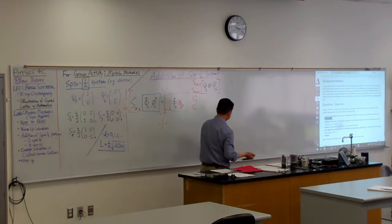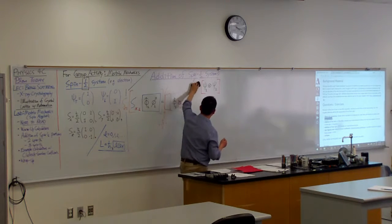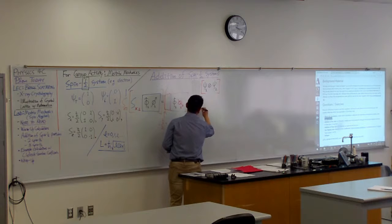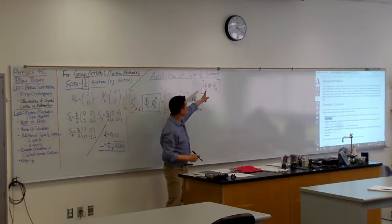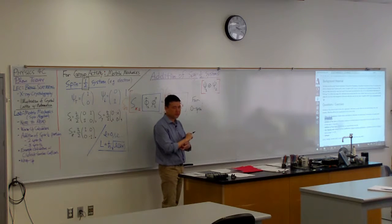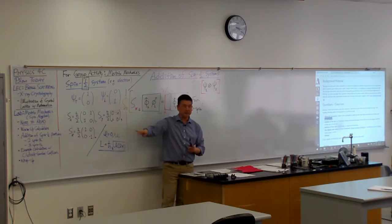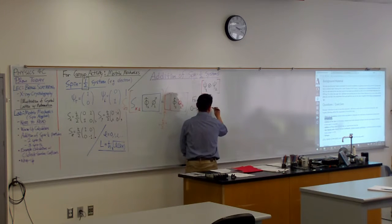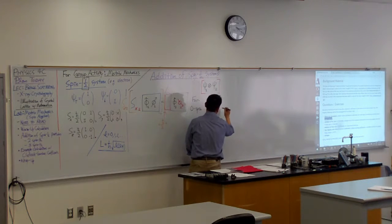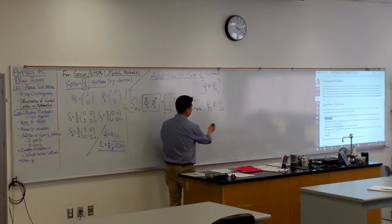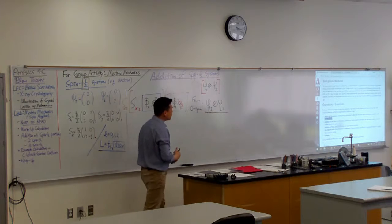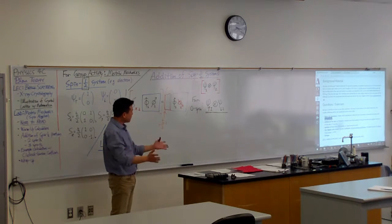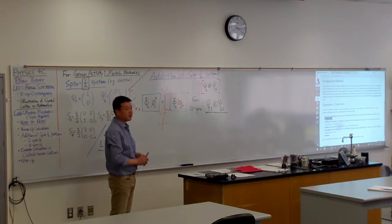So for zero spin, let's try: for particle 1 I use a spin-up state in direct product with spin-down for particle 2. If this is what we think is a zero-spin state, how would you verify it mathematically? What kind of operation would you do to prove this state has zero spin? Apply the S² operator.